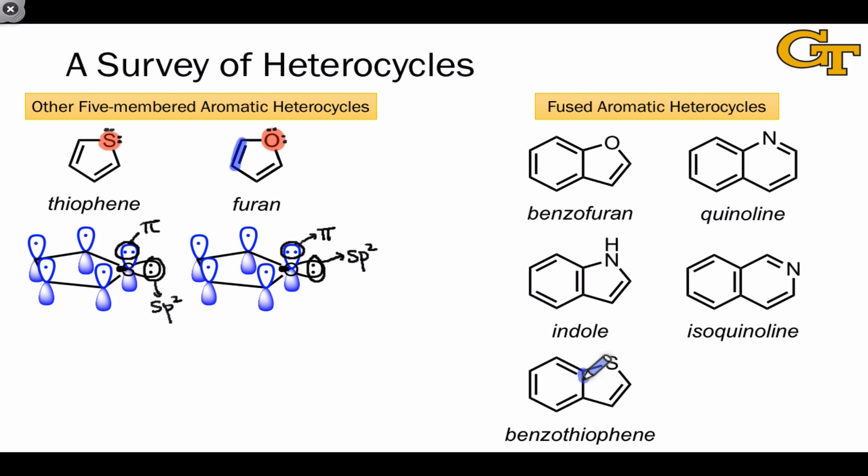Benzothiophene is simply the sulfur analog where a thiophene is fused to a benzene at this carbon-carbon bond closer to the hetero atom. Quinoline and isoquinoline are pyridines bearing fused benzene rings, and they differ in the position of the fusion.